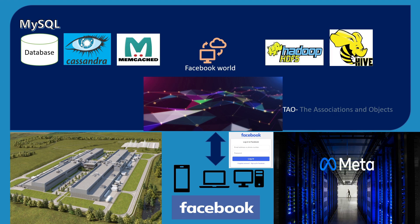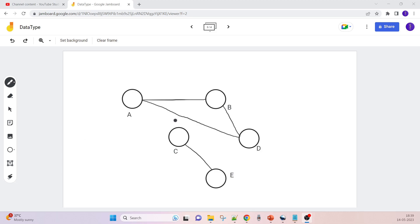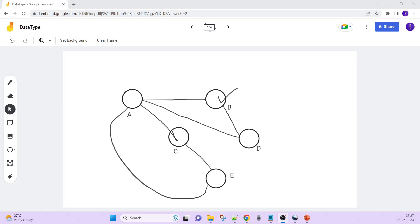The next is TAO (The Associations and Objects), a graph database. In a graph database, different nodes are connected to each other. For example, if I am user A and B is my friend, and B has a friend D, then D can send a request to me — this is the friend suggestion feature. In that request, B acts as a mutual friend. So we can easily identify the relationship between A and D through the mutual friend B.